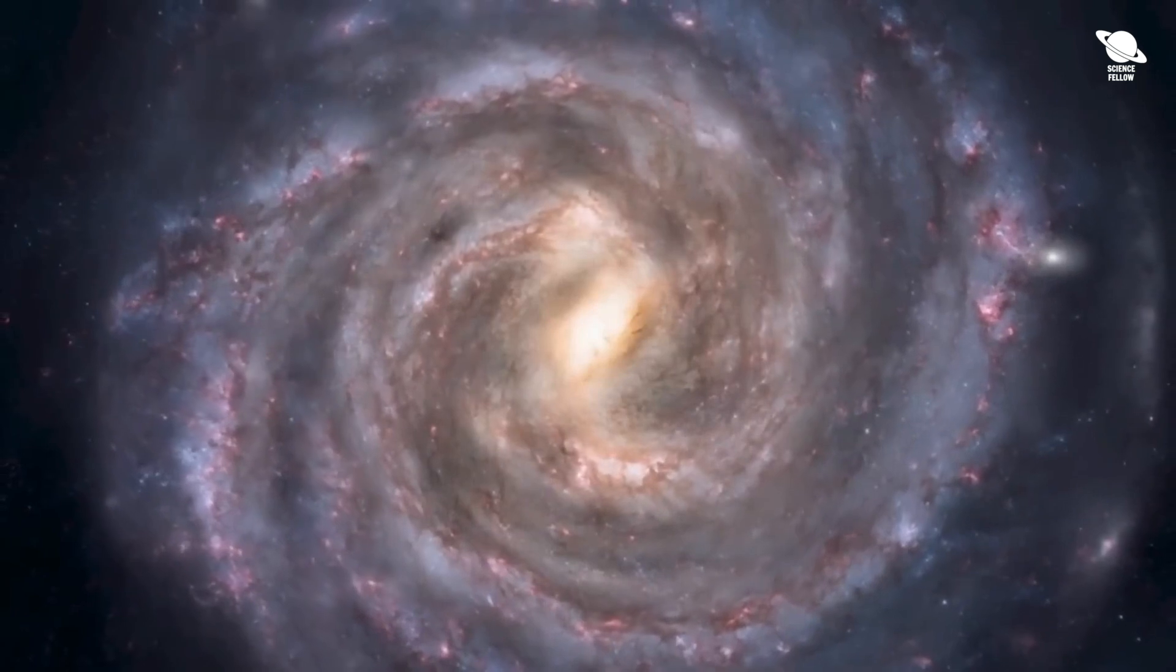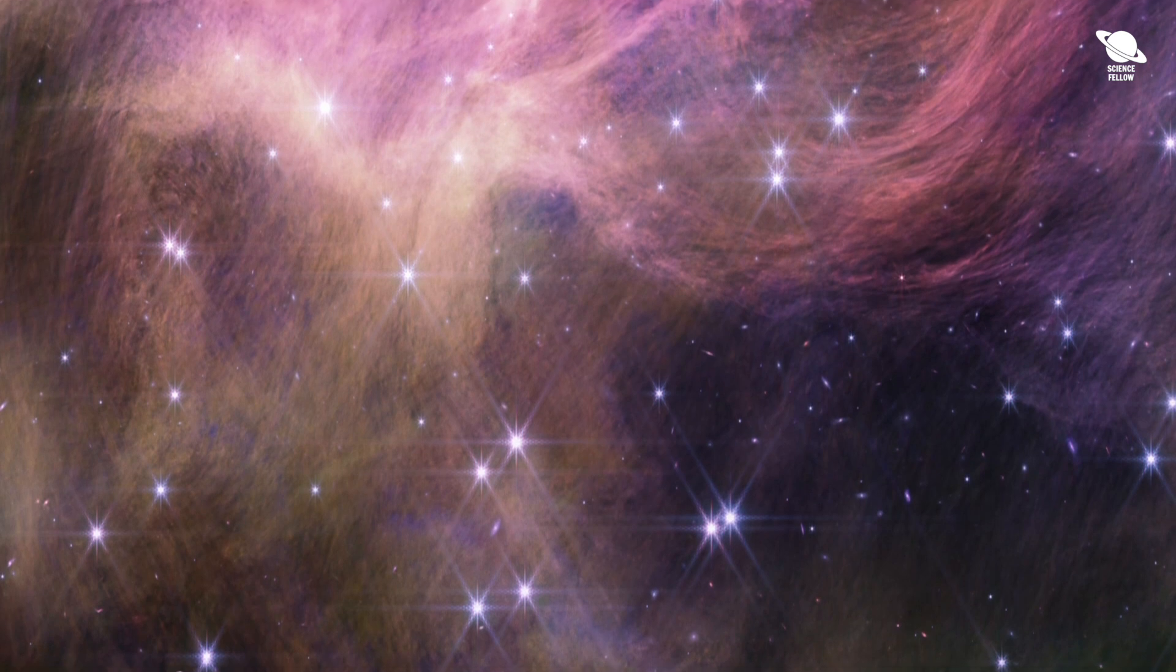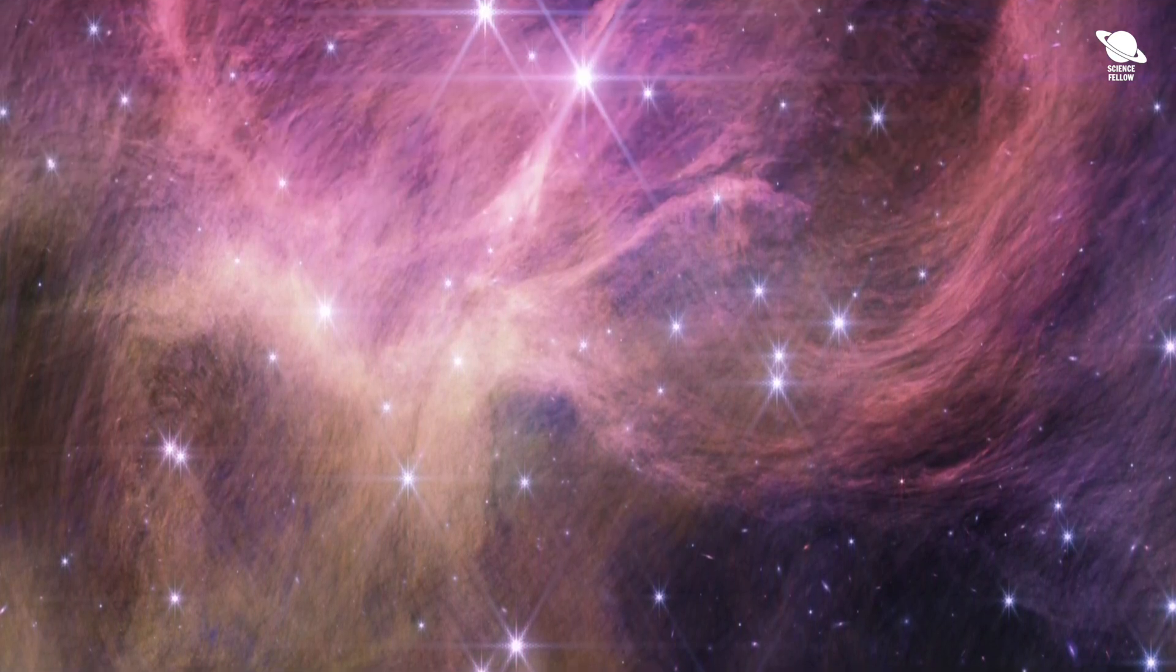Our own Milky Way took 13.7 billion years to form, but these early galaxies appeared much faster, potentially changing how we see the earliest galaxies forming.